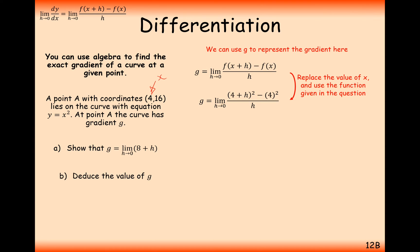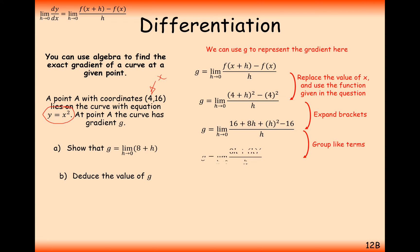So it's going to be the limit as h tends towards zero of 4 plus h squared — because the function we're working with is x squared — minus 4 squared. Expanding the brackets gives 16 plus 8h plus h squared minus 16. The 16s cancel, and we divide through by h, giving the limit as h tends towards zero of 8 plus h, which is exactly what we're looking to show in part A.